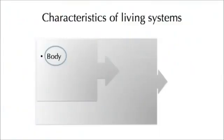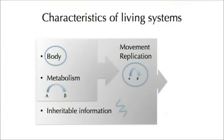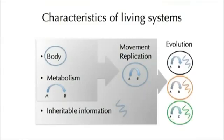So what are these characteristics? We consider first that life has a body — this is necessary to distinguish the self from the environment. Life also has a metabolism, a process by which life can convert resources from the environment into building blocks so it can maintain and build itself. Life also has a kind of inheritable information. We as humans store our information as DNA in our genomes and pass this on to our offspring. If we couple the body and metabolism, we can come up with a system that could perhaps move and replicate. If we add inheritable information, we can come up with a system that would be more lifelike and perhaps evolve.